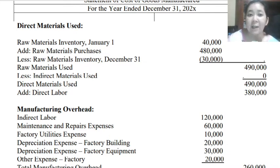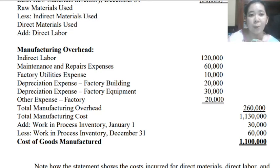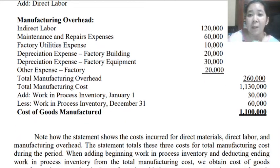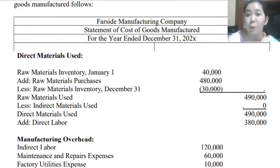We then add direct labor of 380,000, as well as factory overhead. Factory overhead includes indirect labor, maintenance and repairs, factory utilities, depreciation for building and equipment, and other expenses — giving a total manufacturing overhead of 260,000. Adding direct materials used, direct labor, and factory overhead, the total manufacturing cost is 1,130,000. Adding beginning work in process of 30,000 and deducting ending work in process inventory, the cost of goods manufactured is 1,100,000.